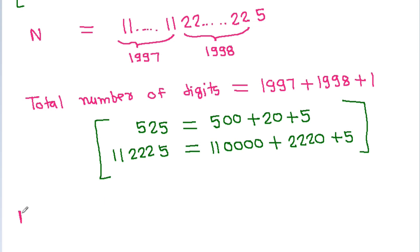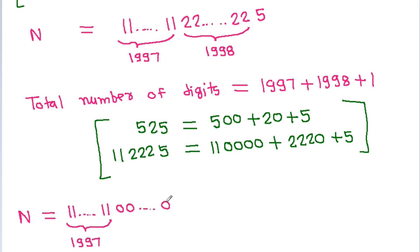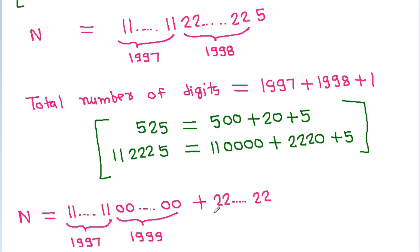So n will be equal to 1,1,1,1...1 (1997 digits) followed by zeros — that is (1998 + 1) = 1999 digits — plus 2,2,2,2...2 (1998 digits) followed by 0, plus 5.